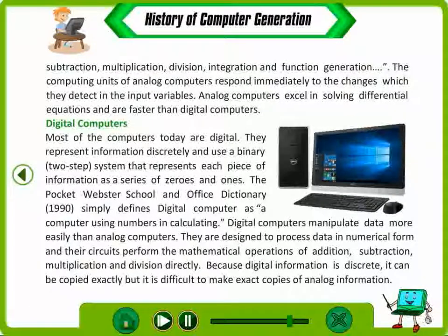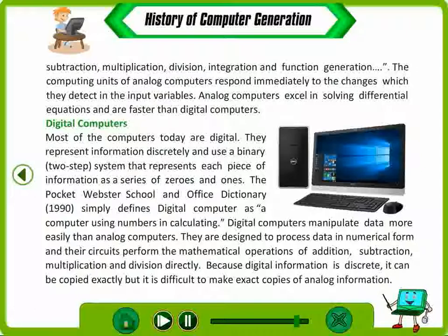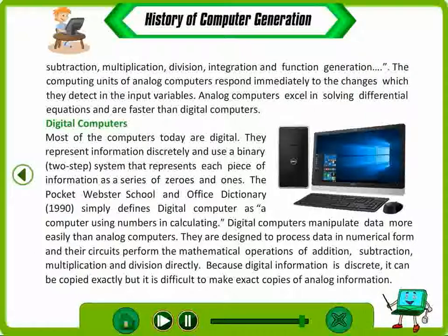Digital Computers. Most computers today are digital. They represent information discretely and use a binary, two-step system that represents each piece of information as a series of zeros and ones. Digital computers manipulate data more easily than analog computers. They are designed to process data in numerical form and their circuits perform the mathematical operations of addition, subtraction, multiplication and division directly. Because digital information is discrete, it can be copied exactly, but it is difficult to make exact copies of analog information.